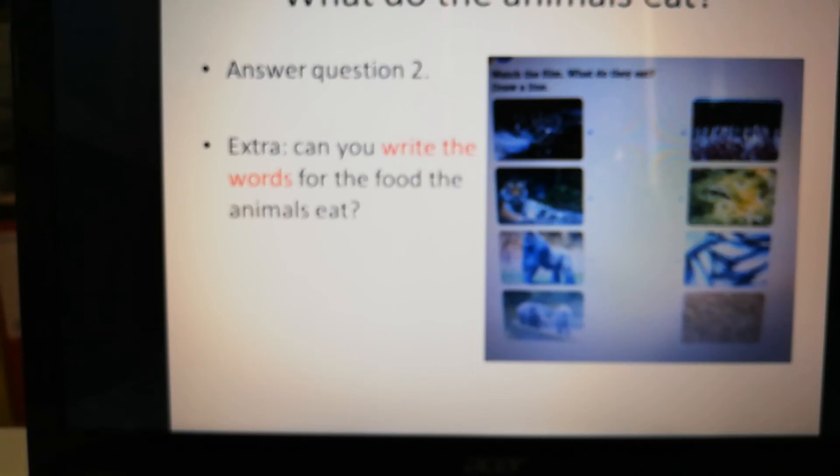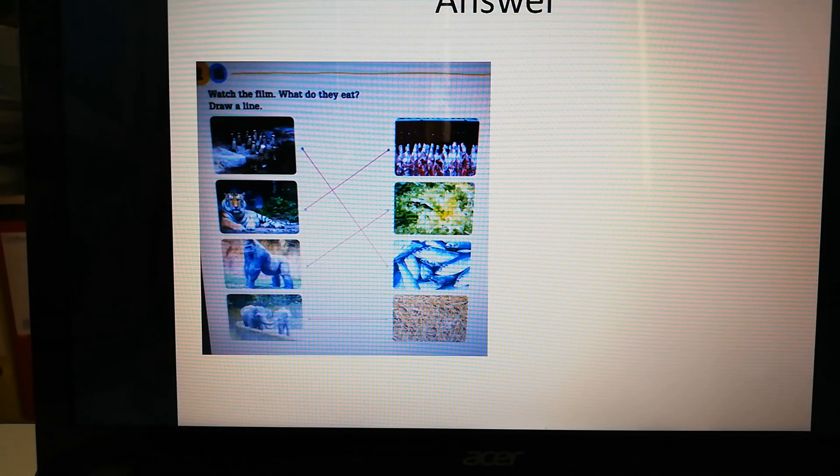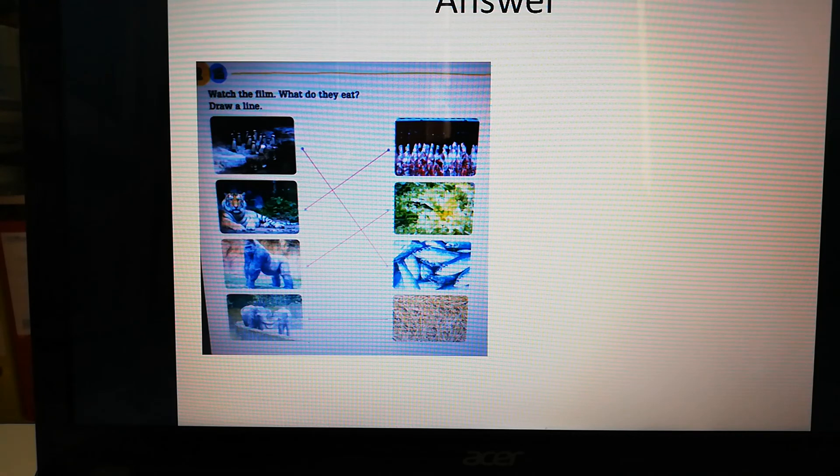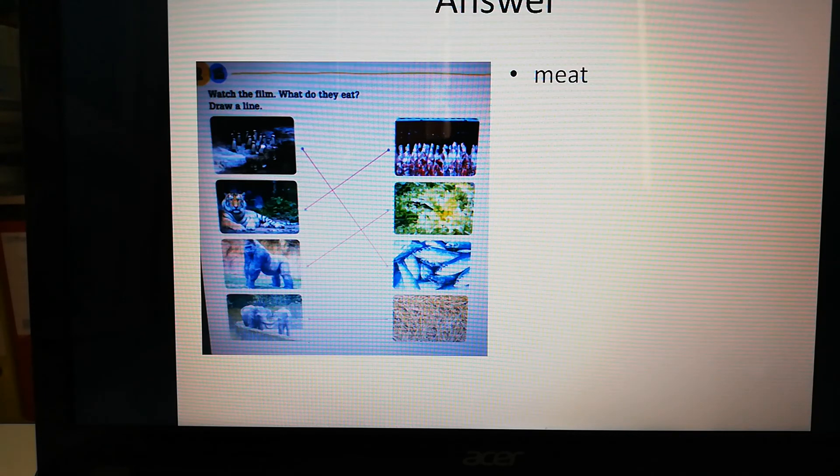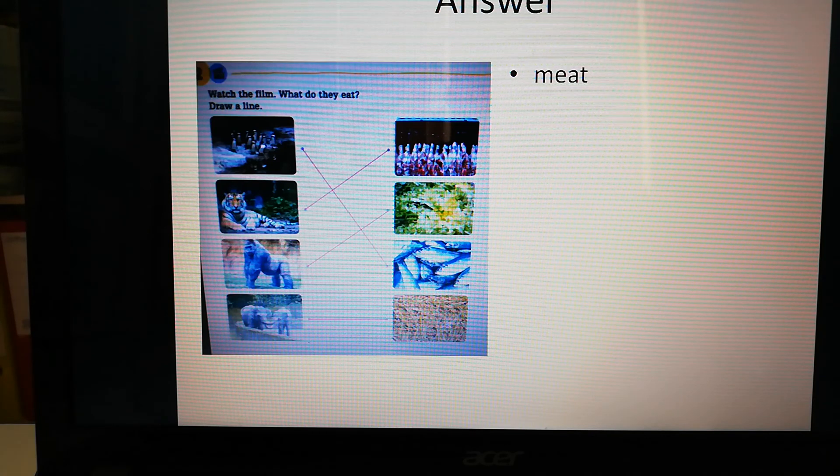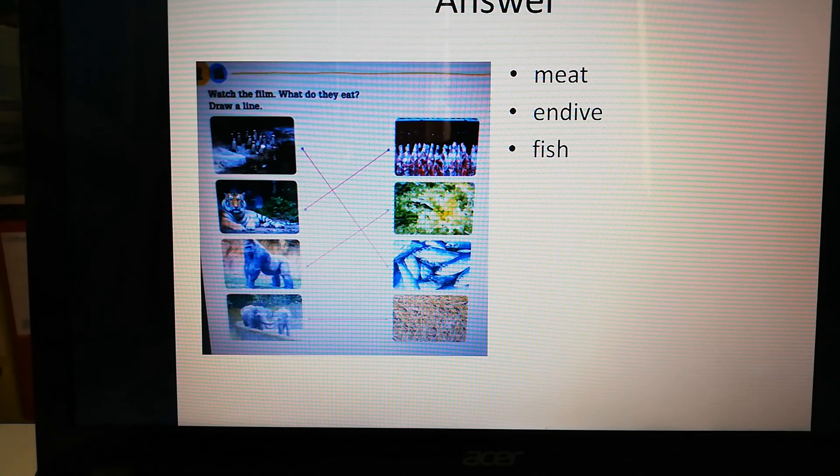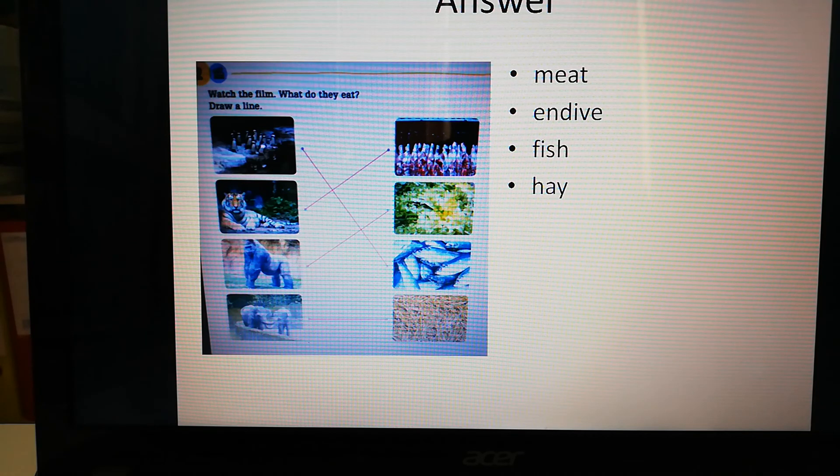Well then let's have a look now at the answers. You see these are the lines. So the panthers eat meat. The gorillas eat endive. The penguins eat fish or herring. And the elephants eat hay. Check your spelling. If you've got the spelling wrong you can just write it correctly. Okay.